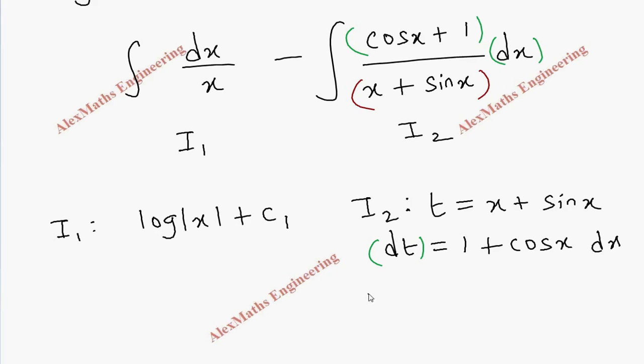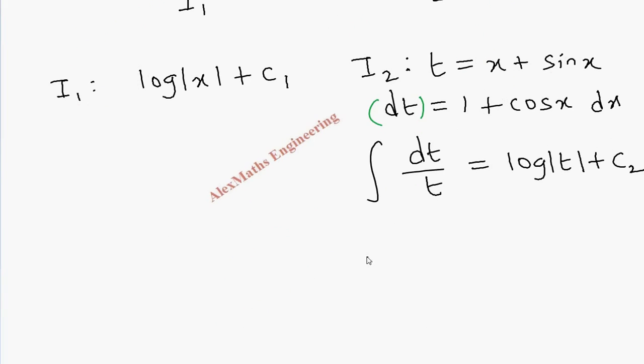So we have the numerator cos x plus 1 into dx, which can be replaced as dt. So integral dt by t, which is log t plus constant c2. We are going to replace t, so this will become log mod x plus sine x plus c2.